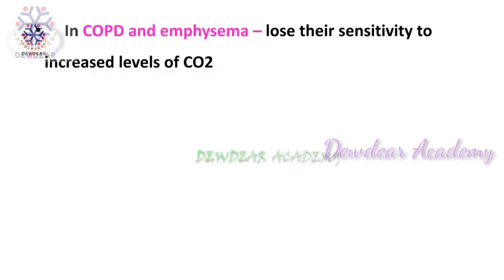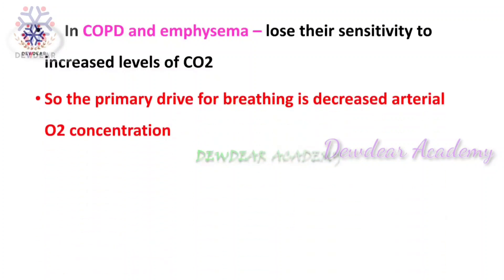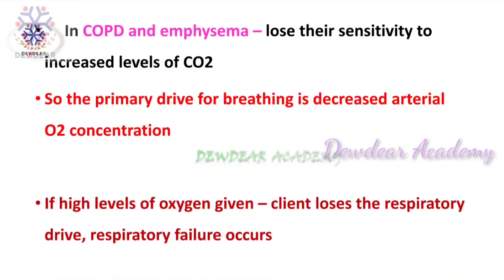In COPD and emphysema patients, they lose their sensitivity to increased levels of carbon dioxide because the central chemoreceptors lose their sensitivity to CO2, and they no longer respond by increasing rate and depth of respiration. Their primary drive for breathing is decreased arterial oxygen concentration. So if high levels of oxygen are administered, they lose their respiratory drive and respiratory failure occurs. That is why in COPD patients, too much oxygen should not be delivered.